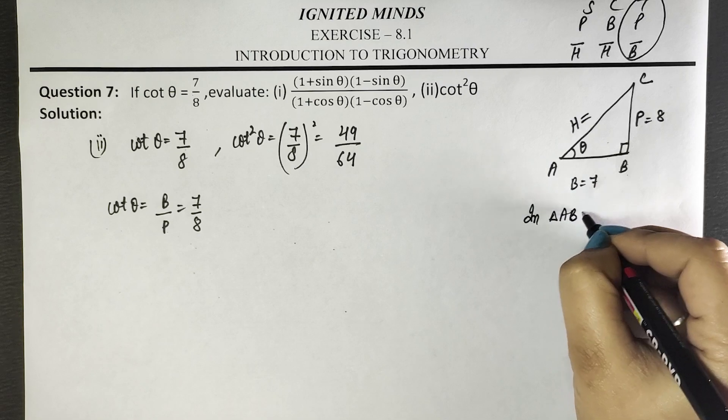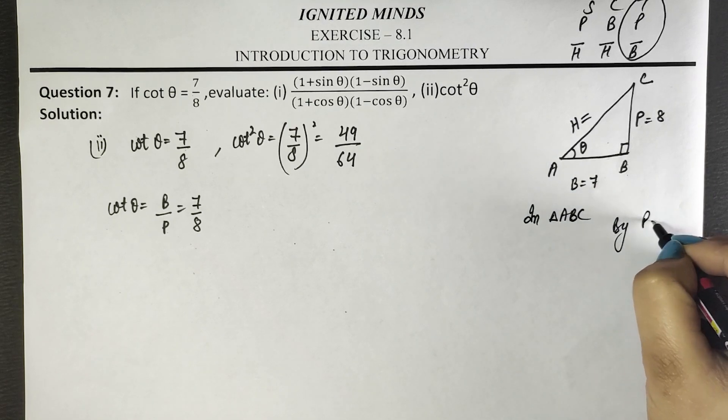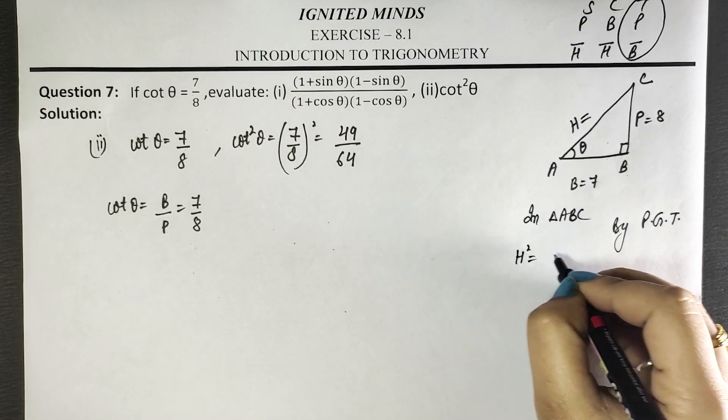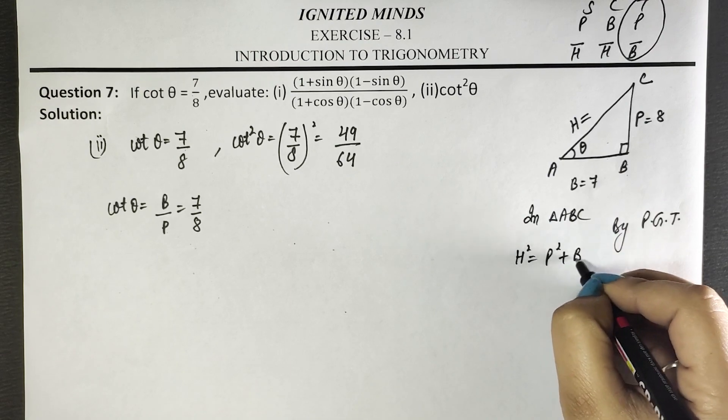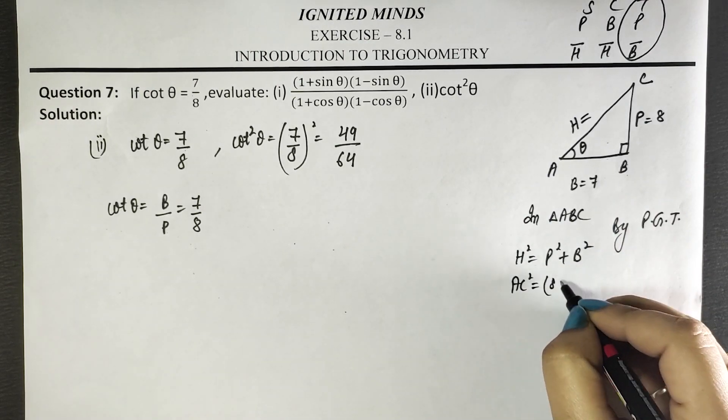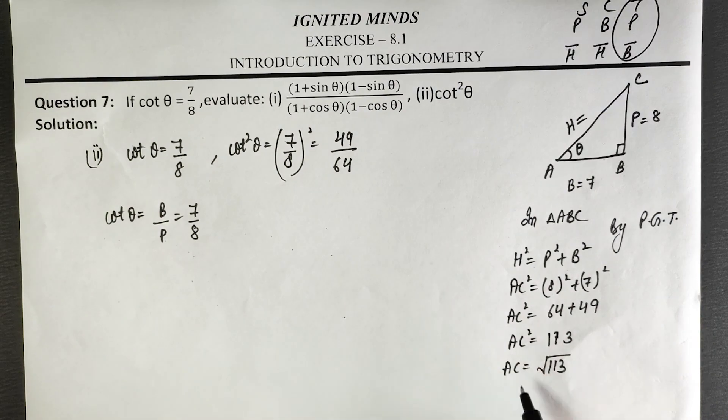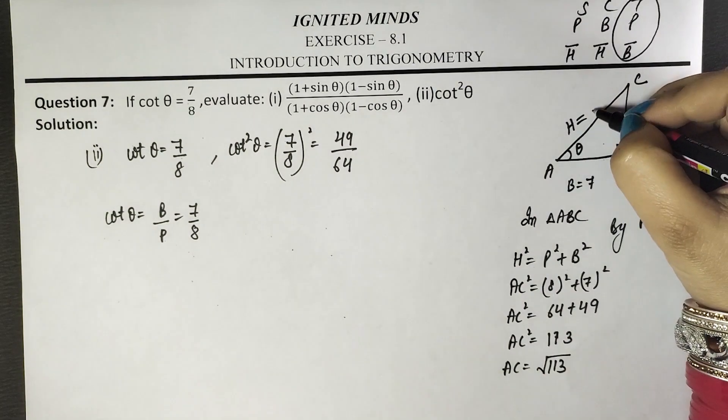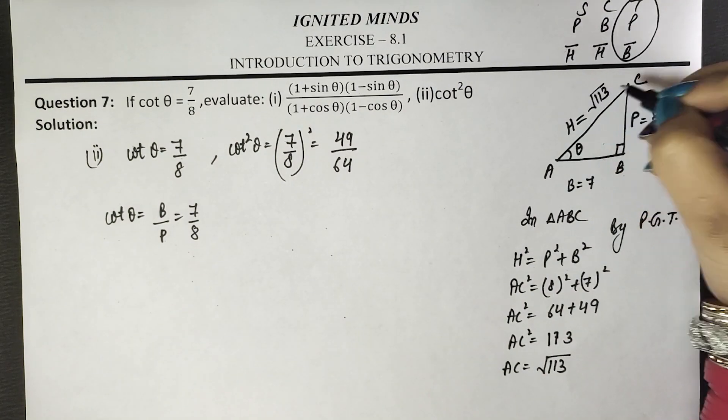By Pythagoras theorem in triangle ABC, hypotenuse squared equals perpendicular squared plus base squared. AC, the hypotenuse, equals root 113.